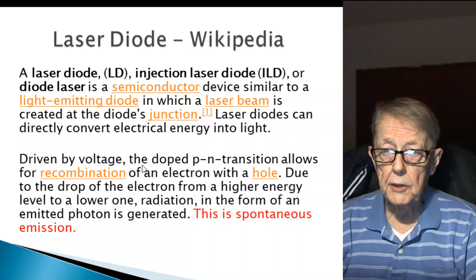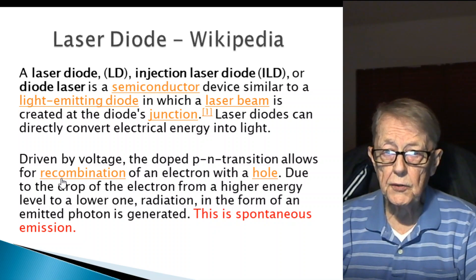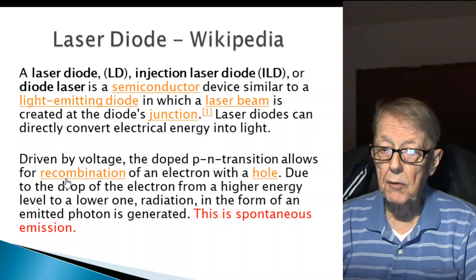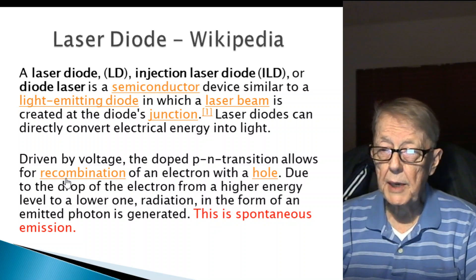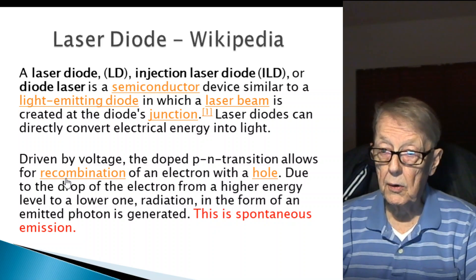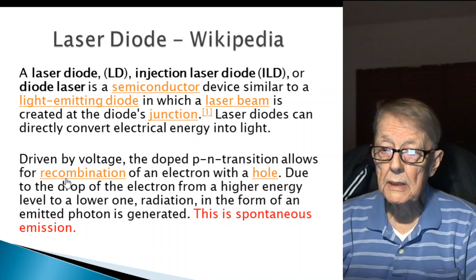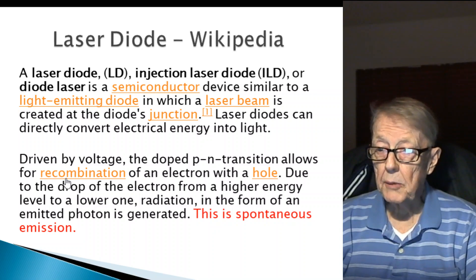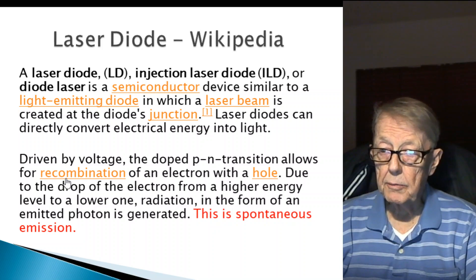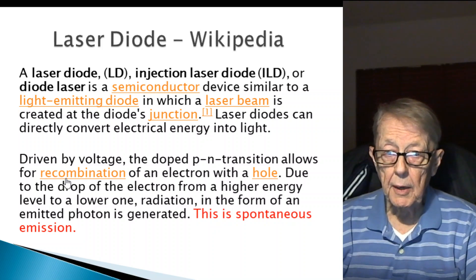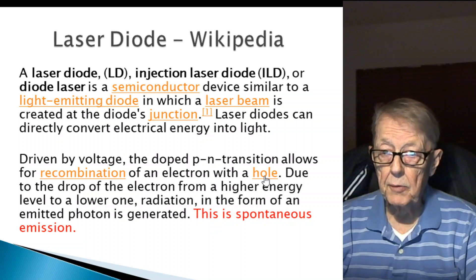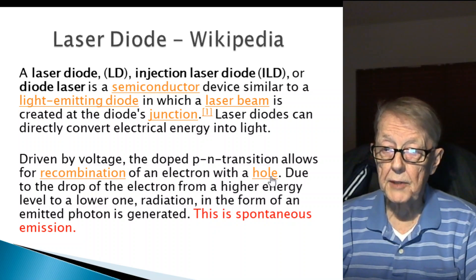Driven by voltage, the doped PN junction allows for the recombination of an electron with a hole. This is the same thing I've been talking about over and over again, how when a particle hits an atom, an electron jumps up.